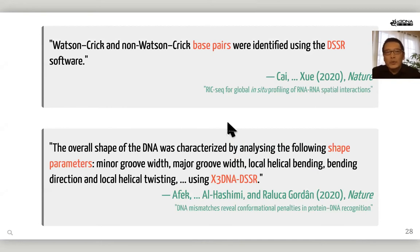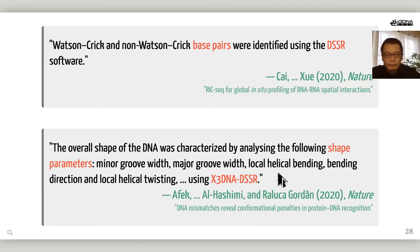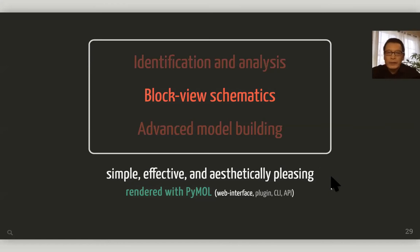The CGS lab used DSSR to identify 2D structures from 3D atomic coordinates. DSSR not only automated the process but removed human errors — it saves you time and gets the job done. In two Nature papers in 2020, DSSR was used to identify Watson-Crick and non-Watson-Crick base pairs, and to calculate shape parameters including groove-width and helical parameters. Along with PMO, DSSR produces block-wheel schematics that are simple, effective, and aesthetically pleasing.